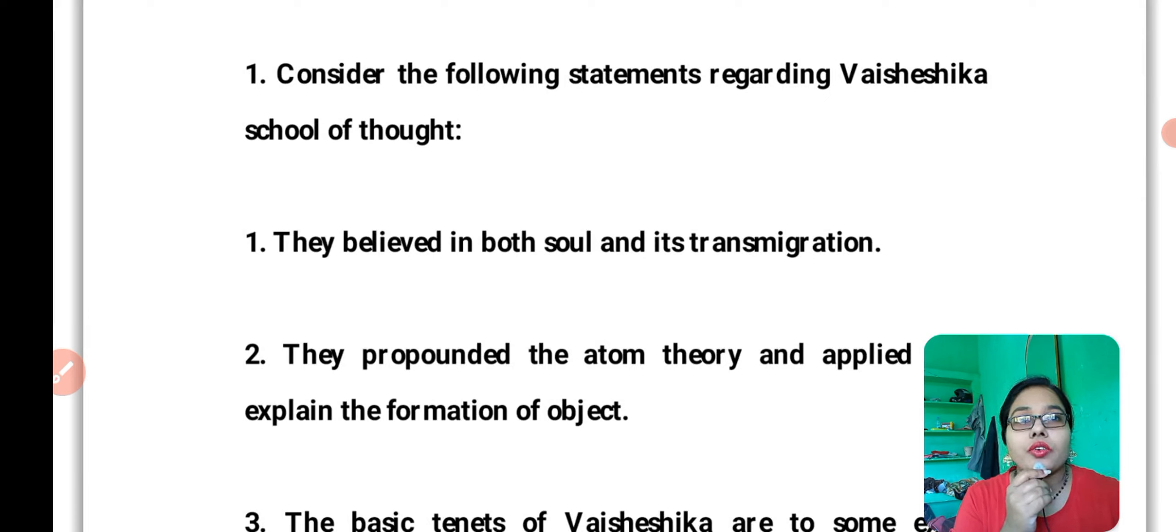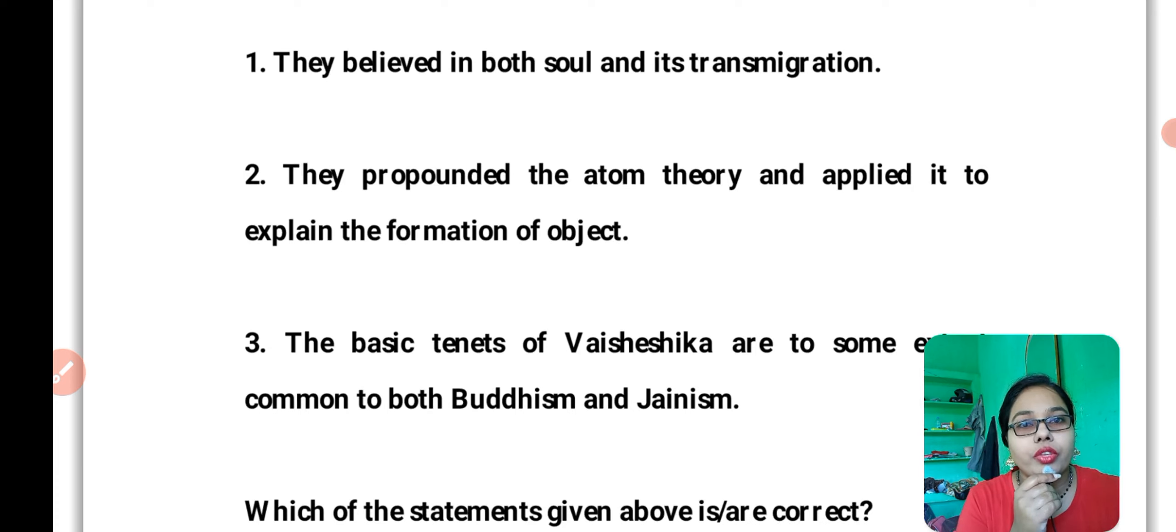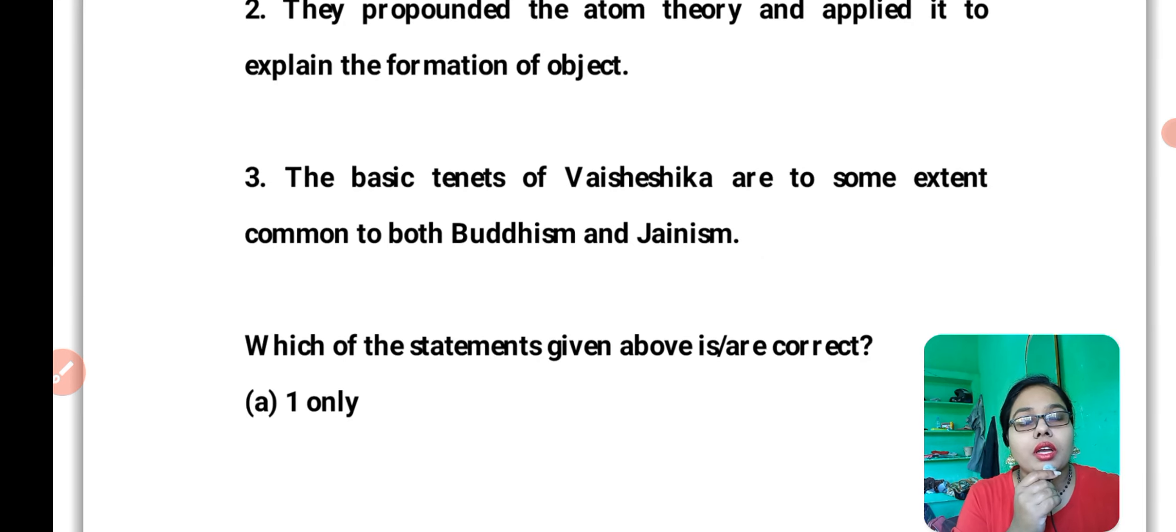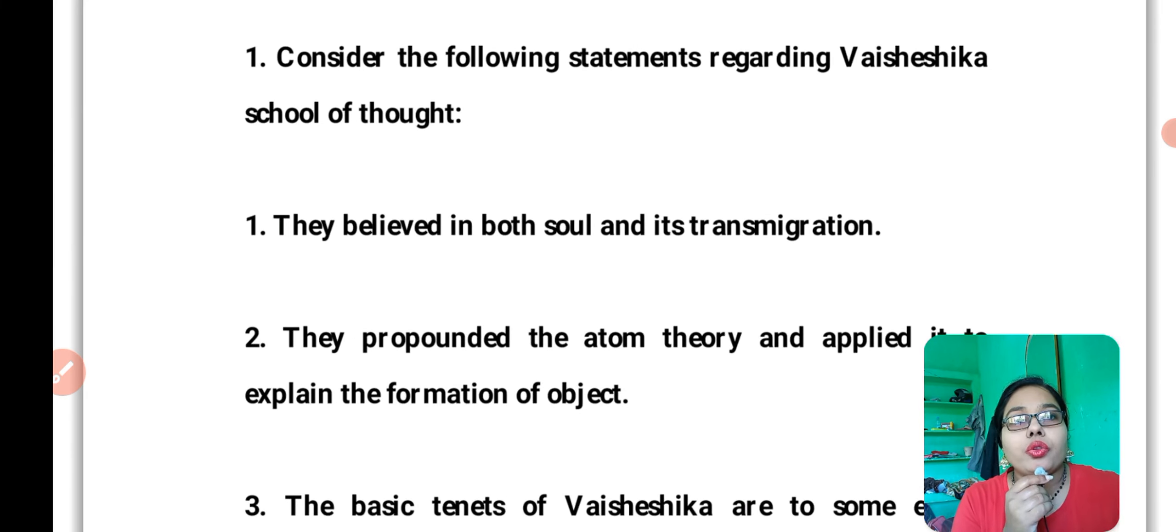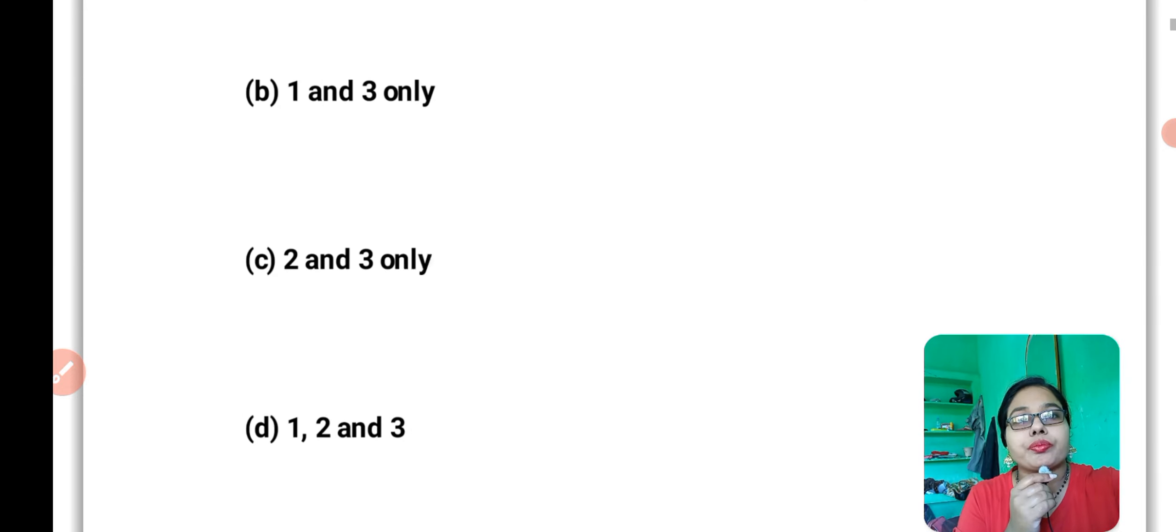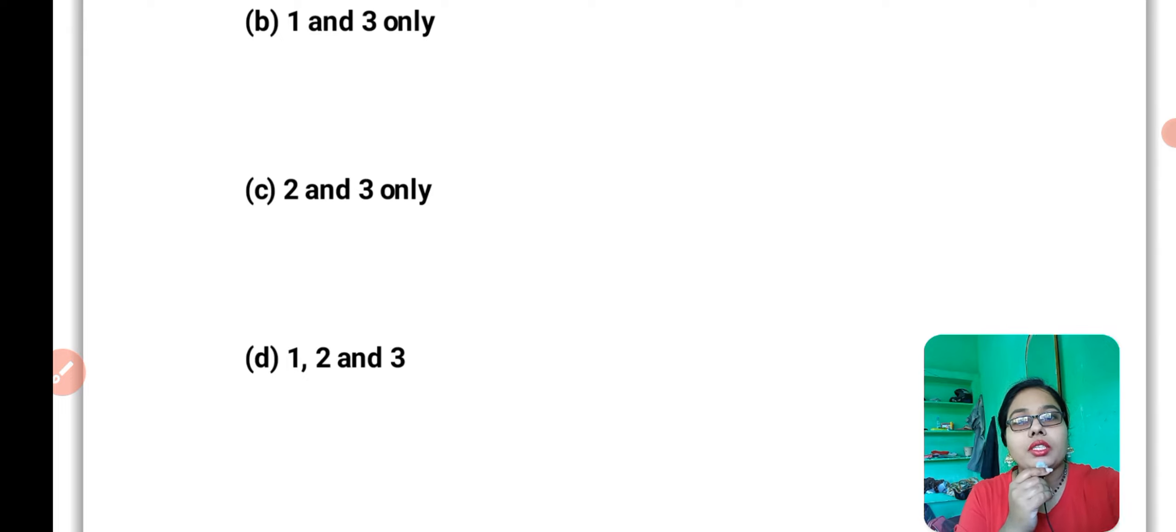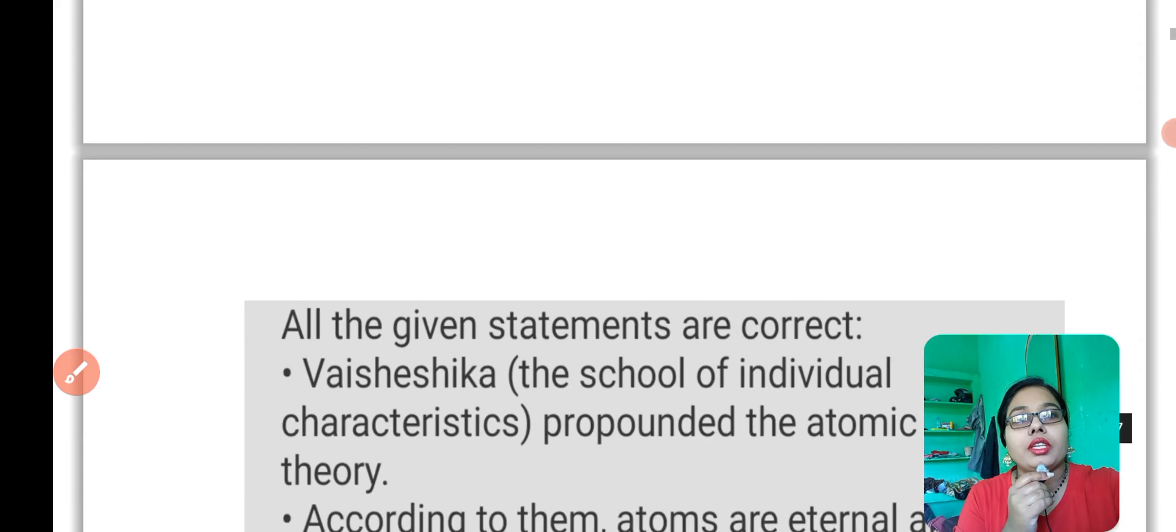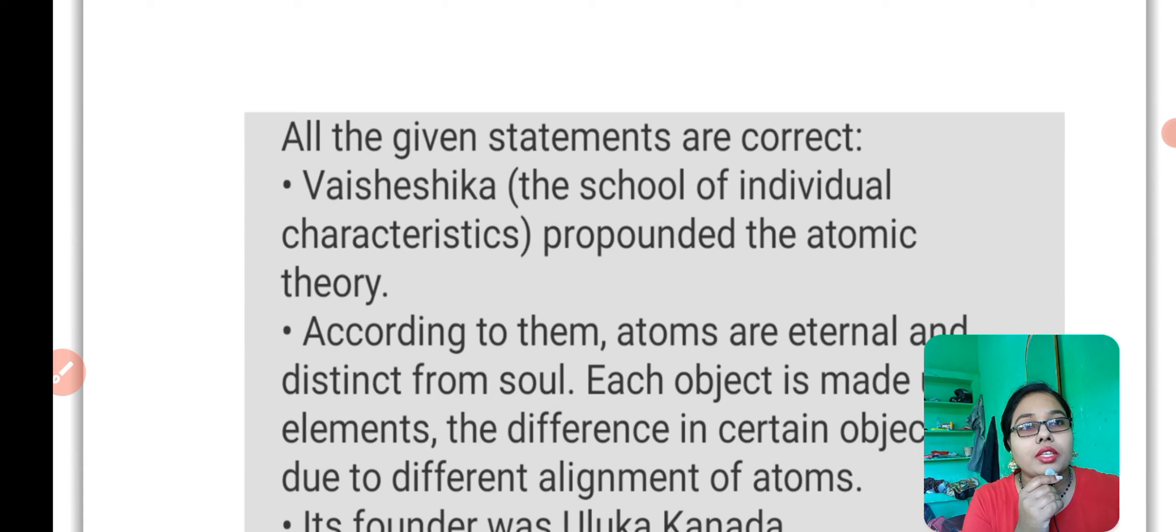Let's start. Today we are going to discuss 10 questions with different topics or subjects. The first subject belongs to history. Question number 1: Consider the following statements regarding Vaisheshika school of thought. They believed in both soul and its transmigration. They propounded the atom theory and applied it to explain the formation of objects. The basic tenets of Vaisheshika are to some extent common to both Buddhism and Jainism.